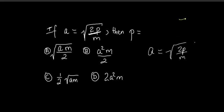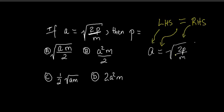P is located on the right-hand side of the equation. We know the left-hand side is equal to the right-hand side. Here we have the equal sign, the left-hand side, and the right-hand side. We're working with the right-hand side since that's where we want to isolate P. The square root is affecting this quantity here, which is 2P over M.